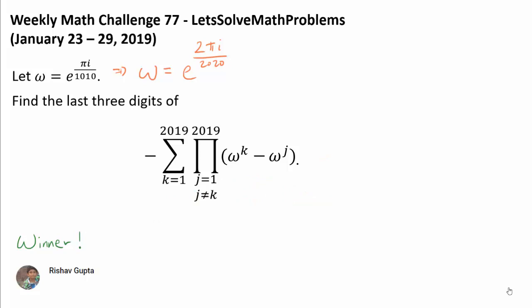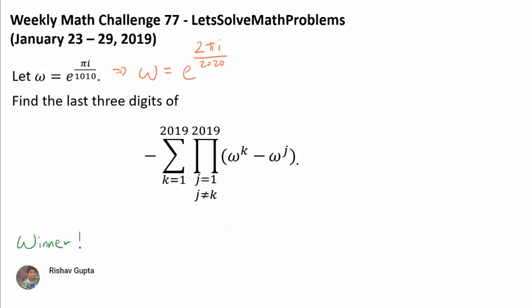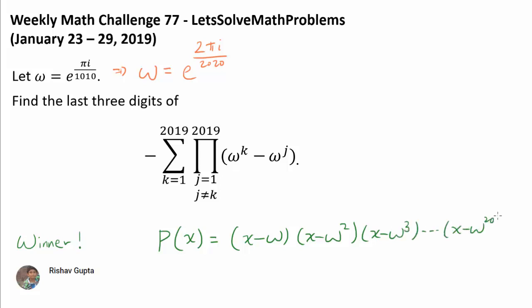The solution I wish to share today is gorgeous and exceedingly beautiful, discovered during the development stage of this problem. It utilizes well-chosen polynomials very closely related to the expression at hand. One of the polynomials is p of x equals x minus omega, times x minus omega squared, times x minus omega cubed, all the way to x minus omega to the 2019. A quick glance is enough to persuade us that this polynomial is closely related to the expression at hand.